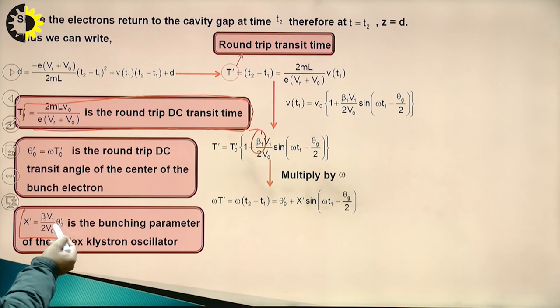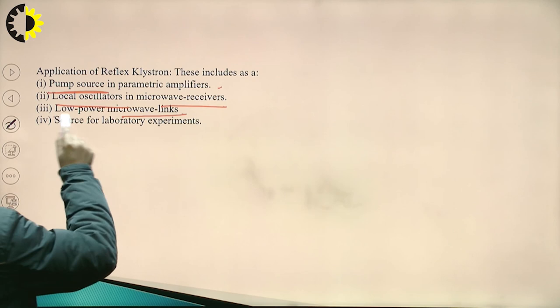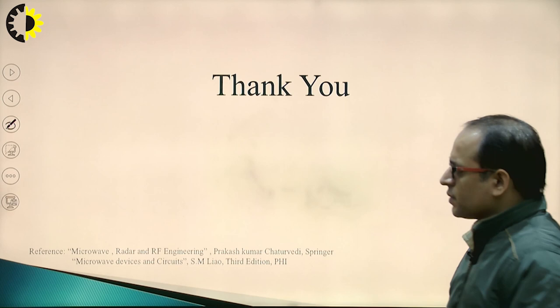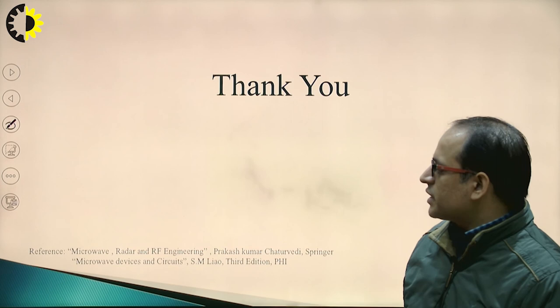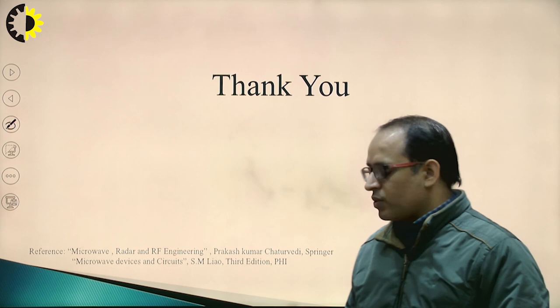The applications of the reflex klystron: it can be used as a pump source in amplifiers, as a local oscillator in microwave receivers for microwave links, as a low power source for setting up microwave links, and as a source for laboratory experiments. The reference books used are Microwave and RF Engineering by Prakash Kumar Chaturvedi, and Microwave Devices and Circuits by S.M. Lyon, third edition. Thank you.